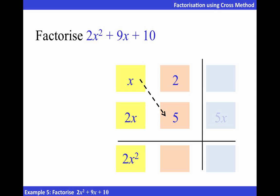Now, when we cross multiply, we will get 4x and 5x. We know that the sum of these two terms should give us positive 9x.